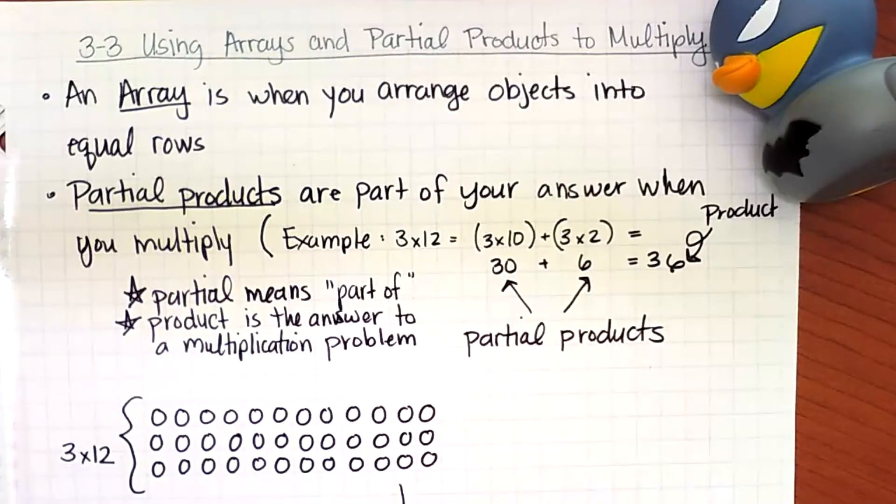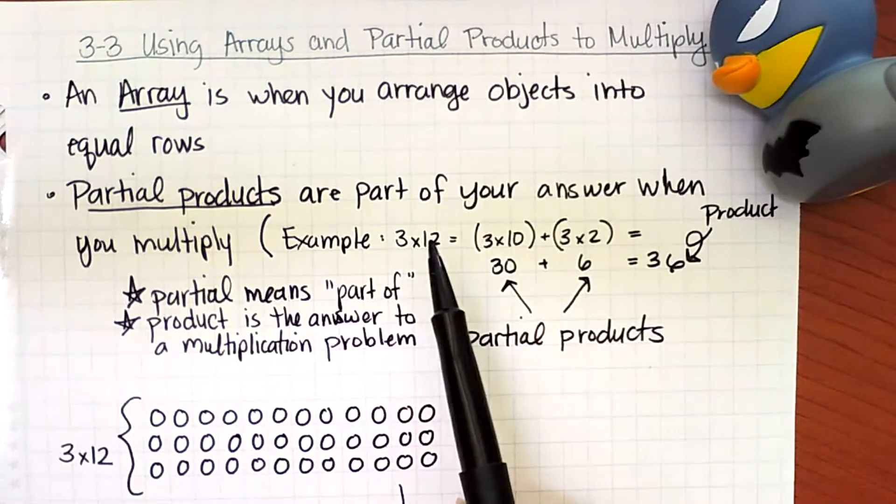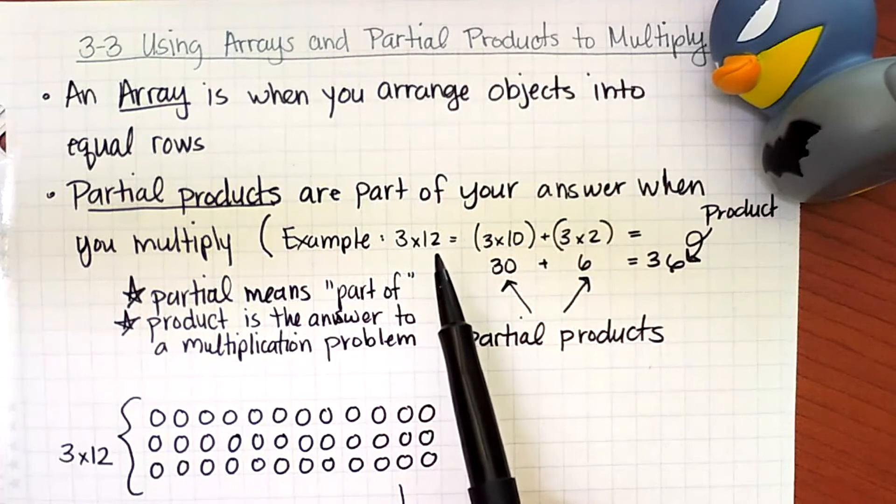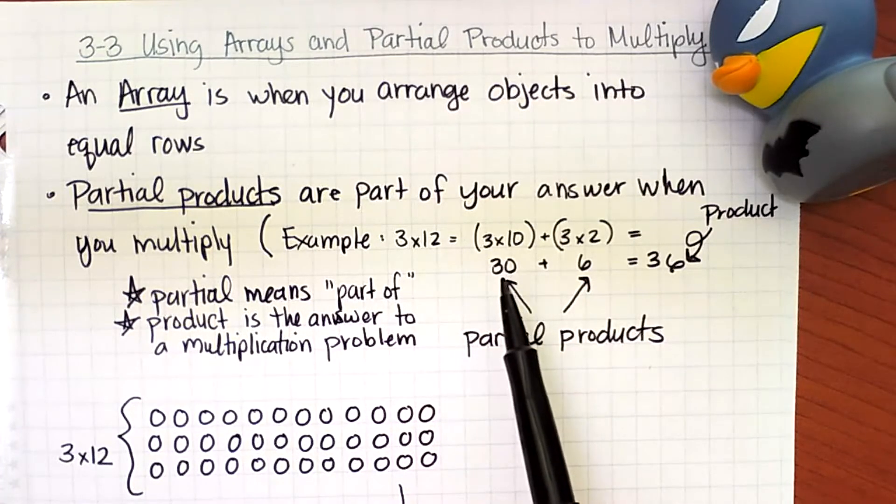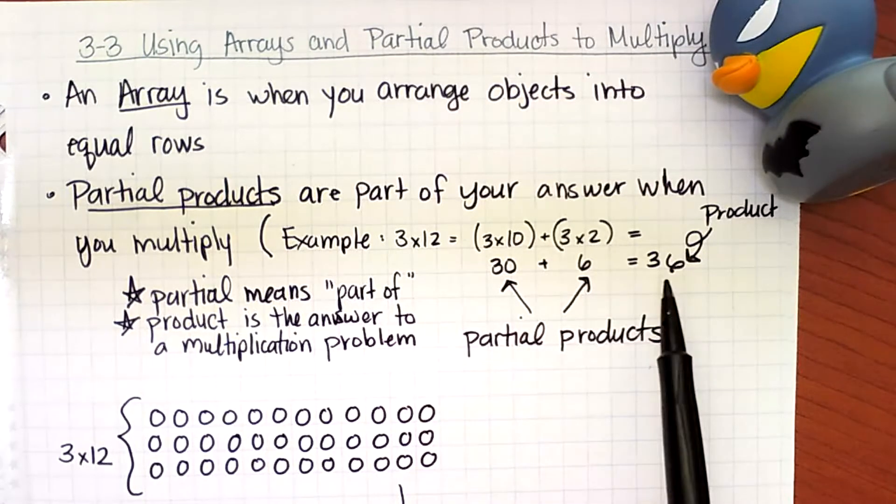Let's take a look at our notes for today. We're on lesson 3-3 using arrays and partial products to multiply. An array is when you arrange objects into equal rows. Partial products are part of your answer when you multiply. Partial means part of, and product is the answer to a multiplication problem. For example, 3 times 12, I can distribute this, break it apart into 3 times a group of 10 plus 3 times a group of 2. 3 times 10 gives me 30, 3 times 2 gives me 6. These two are the partial products. I need to put them together and add them to find my total product.